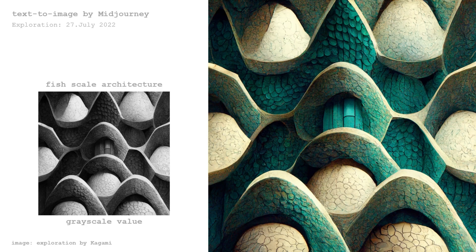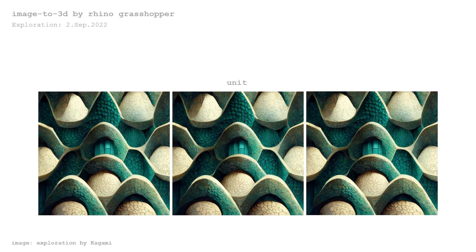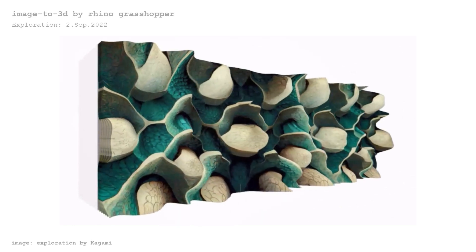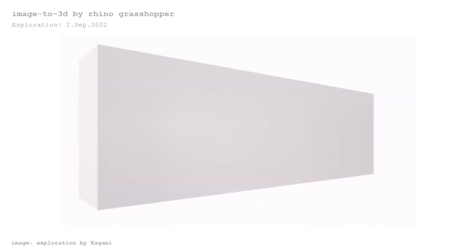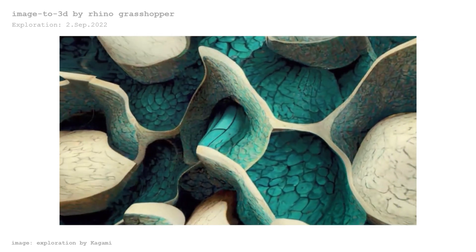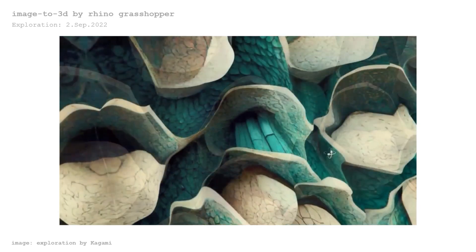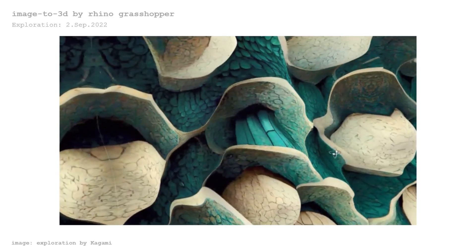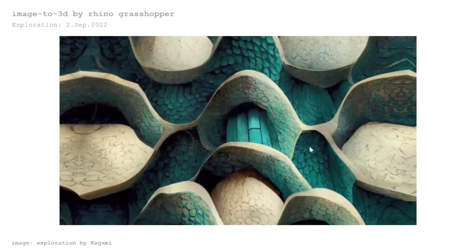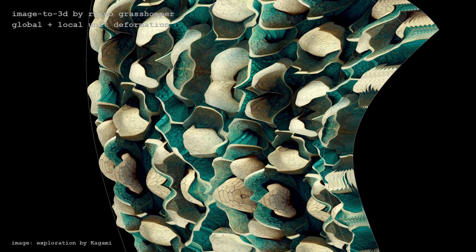This is another Midjourney AI experiment with the same text input. Since this image is almost symmetrical, it could be considered as a unit — like a continuous facade skin with deformation. Surface deformation could be controlled with multiplication of height map values. As you can see, light color edge parts are popping out and having unique texture. The combination of units could be developed not only horizontally but also vertically.